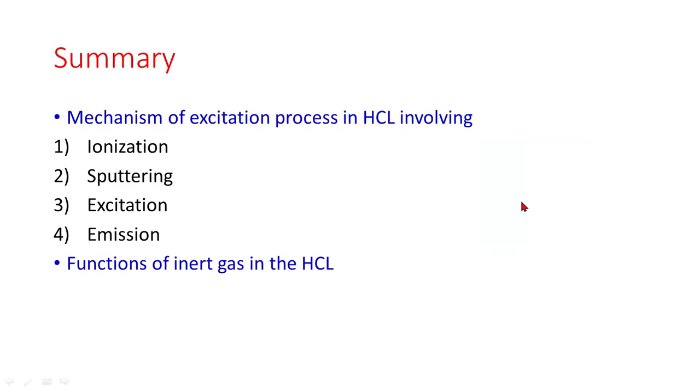In summary, we have discussed mechanism of excitation process in hollow cathode lamp involving ionization, sputtering, excitation, emission, and we have discussed functions of inert gas in hollow cathode lamp.